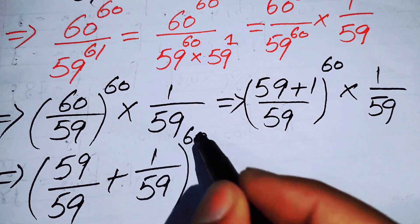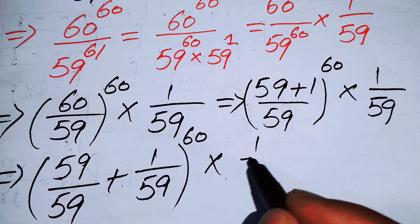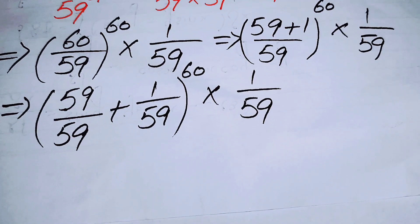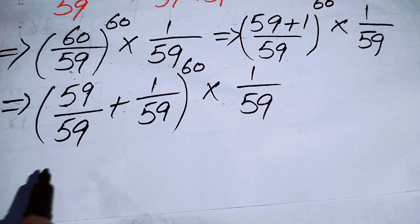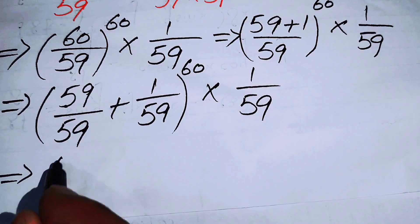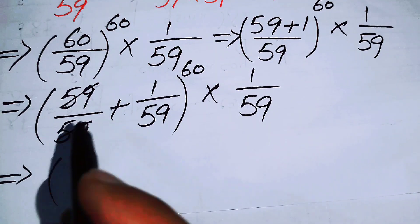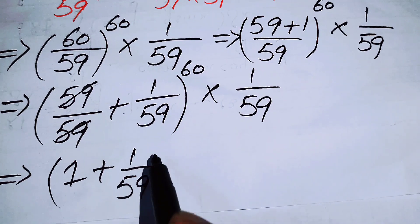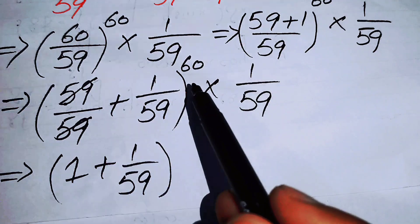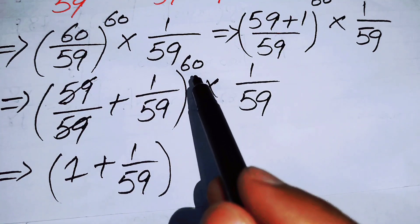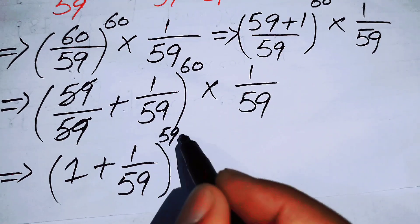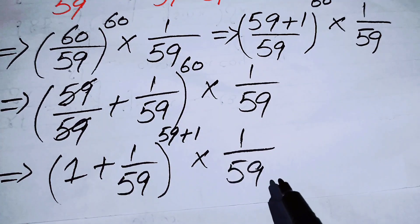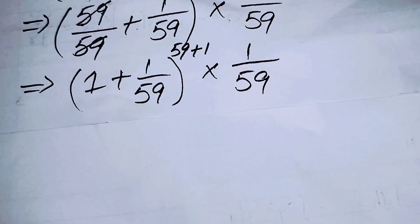After simplifying, the 59/59 term becomes 1, leaving (1 + 1/59)^60 × (1/59). I then rewrite the exponent 60 as 59 + 1, giving (1 + 1/59)^(59+1) × (1/59).